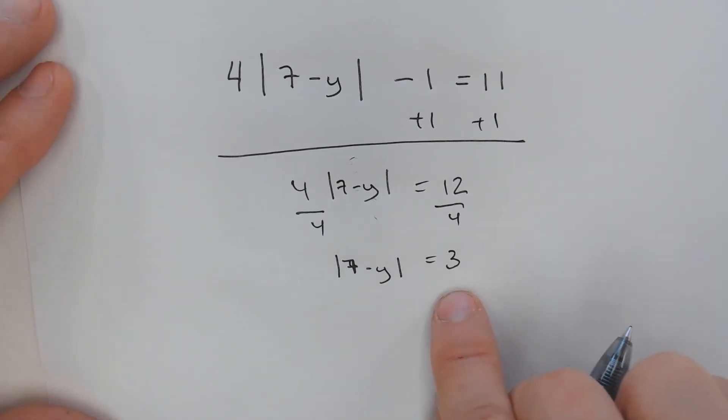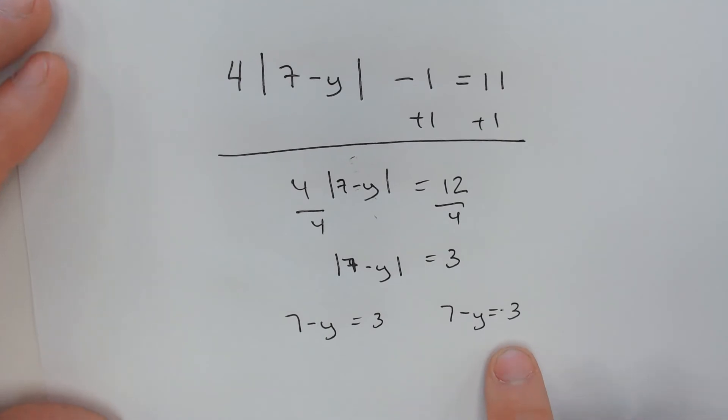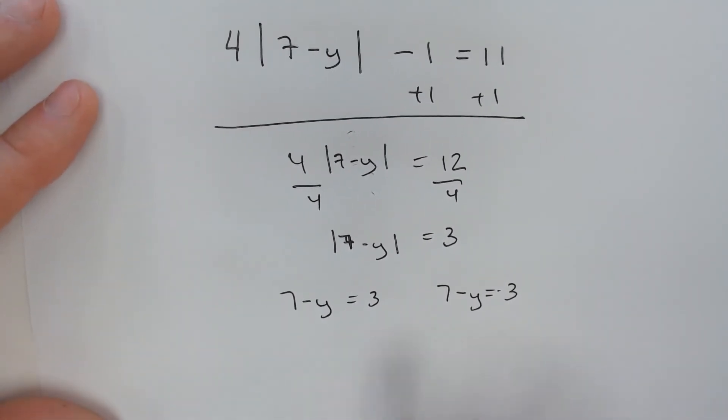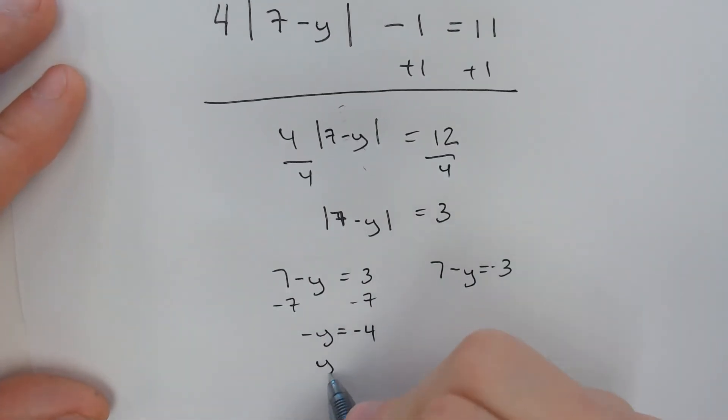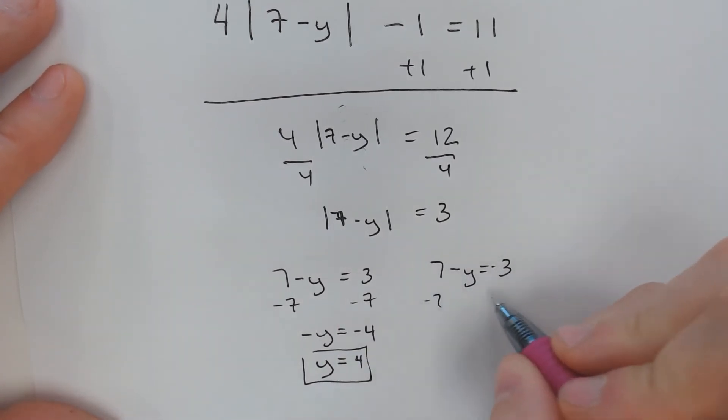And now it's isolated and equals 3. Now it's a normal problem. Now you can set 7 minus y equal to 3 and 7 minus y equal to negative 3 because the absolute value bars are isolated. Solve both of those like normal. Subtract 7, subtract 7. Negative y equals negative 4, which means y will equal a regular 4. Subtract 7 for the other one. Negative y equals negative 10, which means y will equal a regular 10.